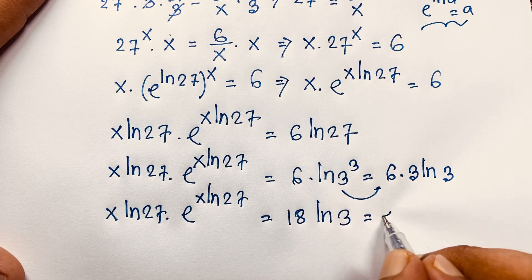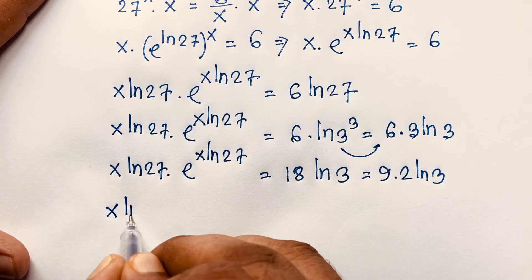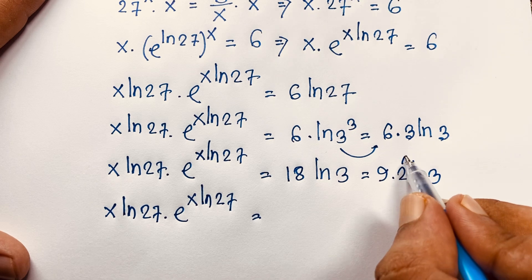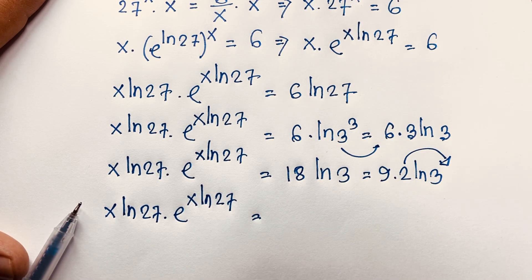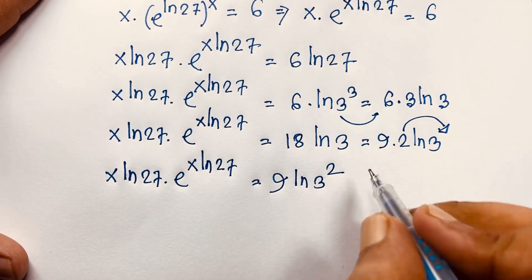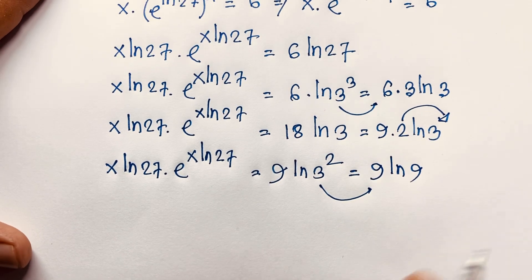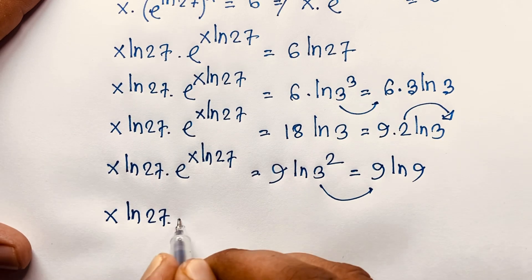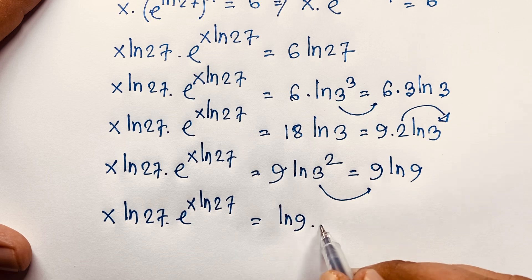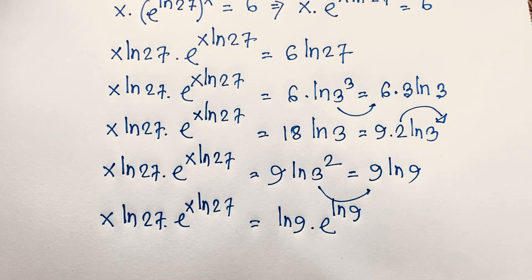Now 18 = 9 times 2, so we have x·ln27 · e^(x·ln27) = 9 · 2·ln3 = 9·ln(3²) = 9·ln9. Since 3² = 9, this becomes 9·ln9. We rewrite 9 as e^(ln9), so the right-hand side is ln9 · e^(ln9).